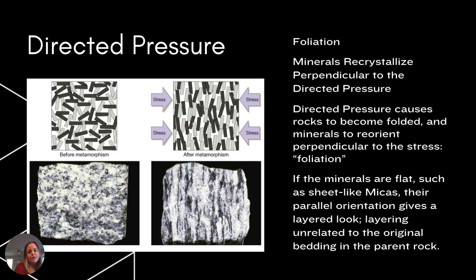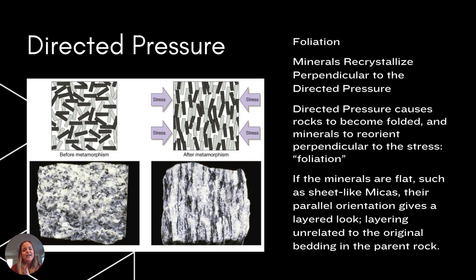Before metamorphism, a granite has interlocking crystals that are scattered with no particular alignment. After metamorphism with directed stress applied from two sides, those minerals start to align. The result is a rock called gneiss — G-N-E-I-S-S, not N-I-C-E. It looks like an organized granite, which it kind of is — a foliated granite — making it a metamorphic rock. That foliated texture is only found in metamorphic rocks because it comes from directed pressure.